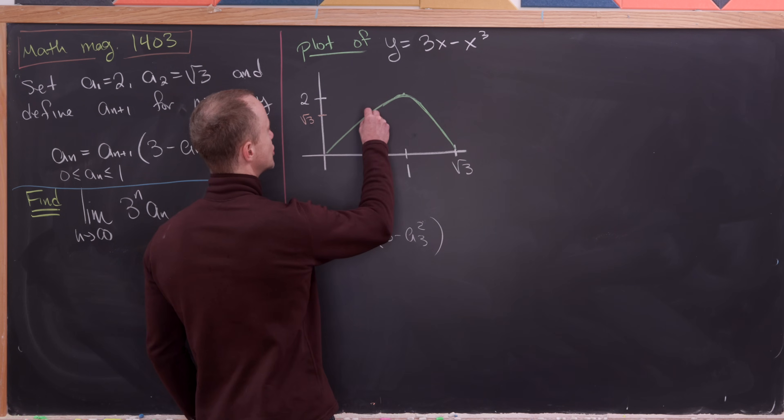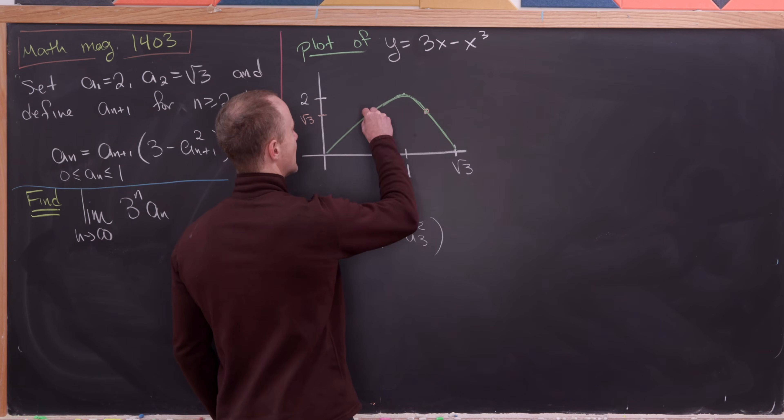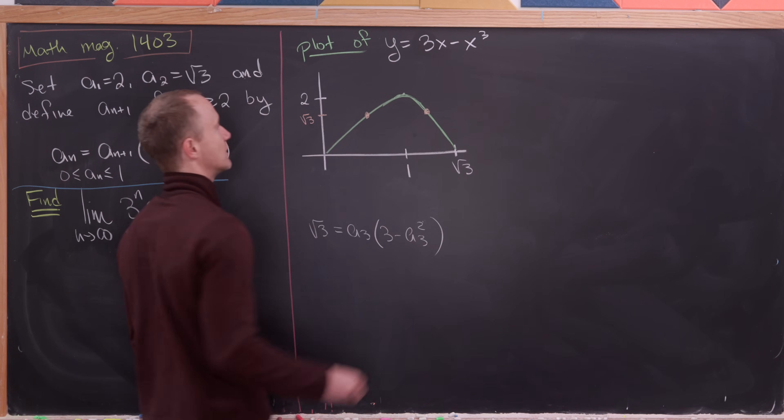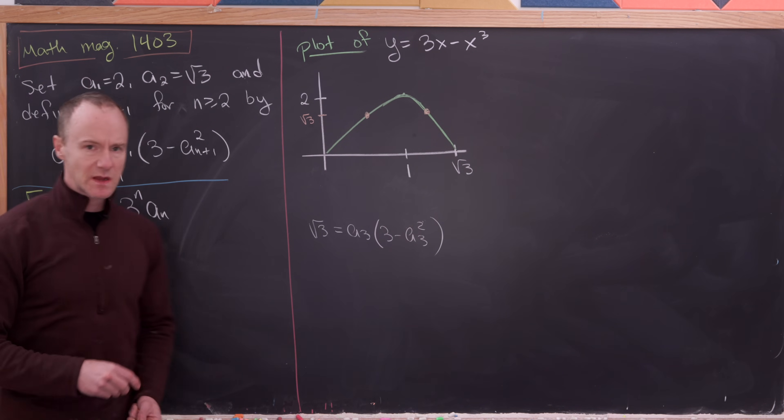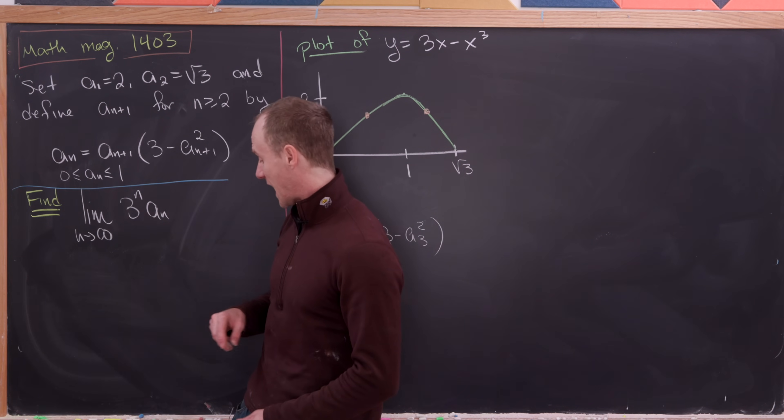But observe that there are two solutions. There's one right here and then there's one right here. And that's by this plot that I've built for the graph y equals 3x minus x cubed. But then by this condition that we added on,